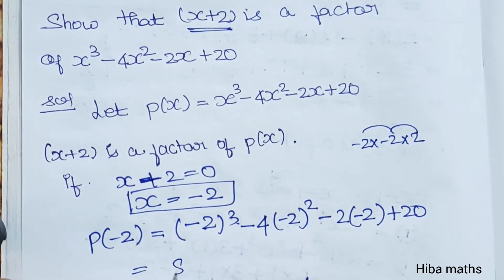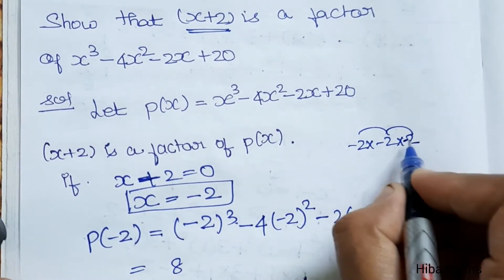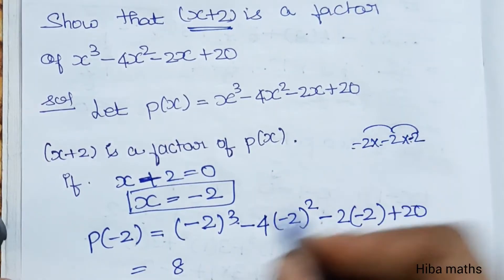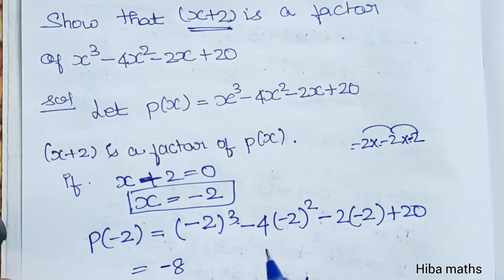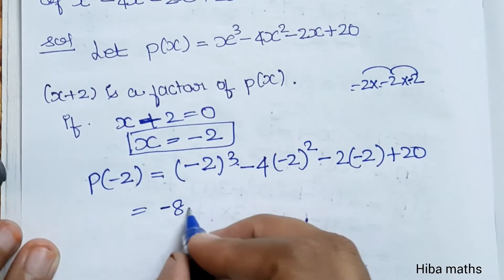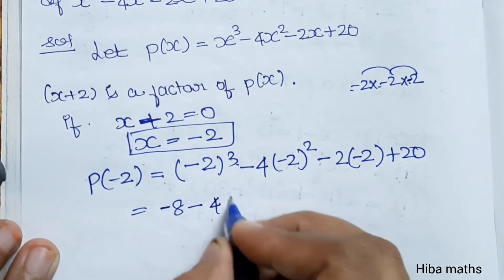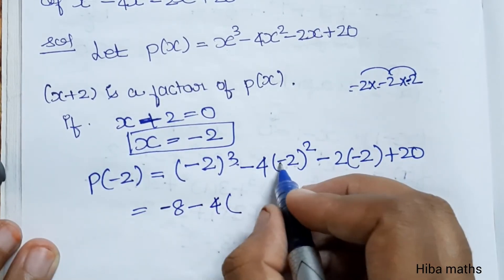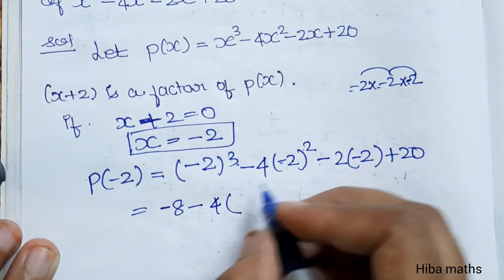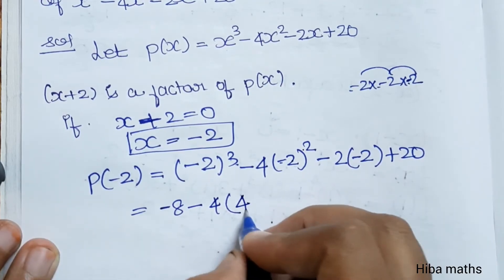2 cubed: 2 twos are 4, 4 twos are 8, so minus 2 cubed equals minus 8. Minus 4 into minus 2 squared: minus 2 squared is 4, so minus 4 times 4 equals minus 16.